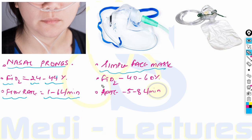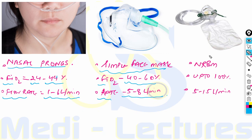The simple face mask can provide FiO2 from 40% to 60% at a rate of 5 to 8 liters per minute. There is no advantage of giving oxygen more than 8 liters per minute or less than 5 liters per minute from the face mask.